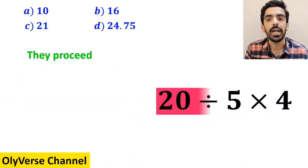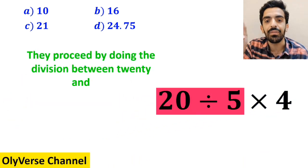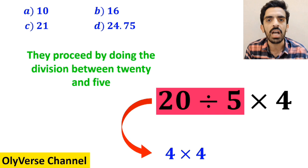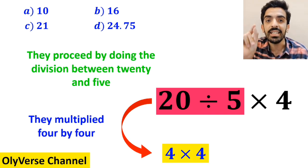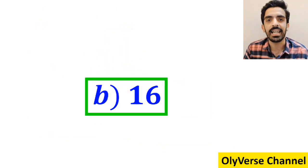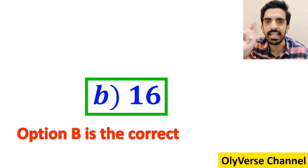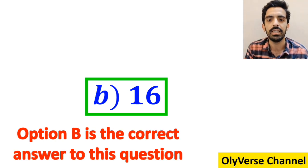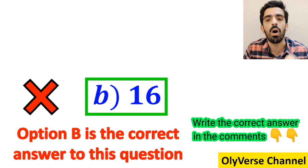Then they proceed by doing the division between 20 and 5 which gives them 4 times 4. And finally they multiply 4 by 4 which ends up with the answer 16. Then without any hesitation they quickly say that option b is the correct answer to this question. However that's definitely wrong.